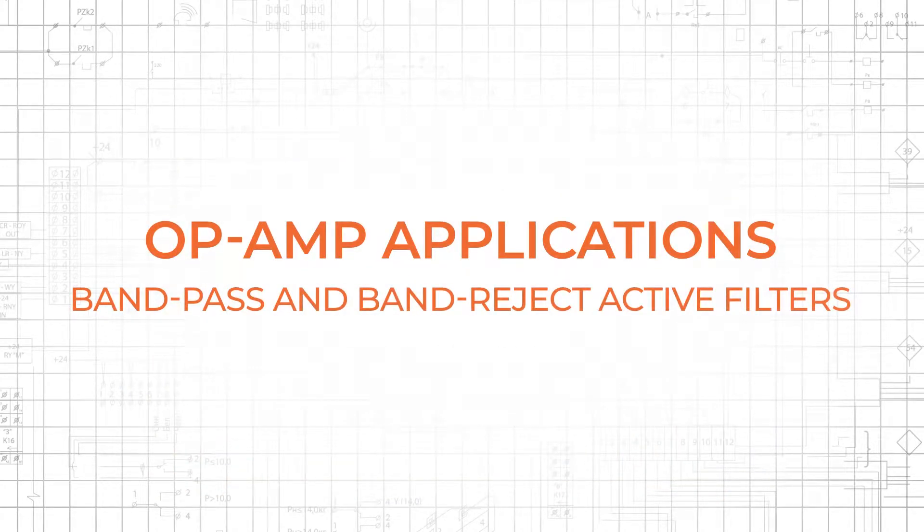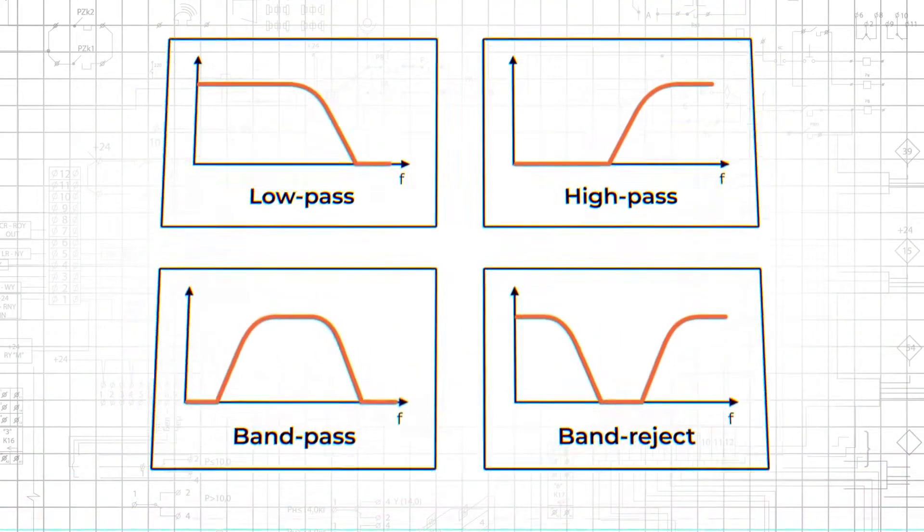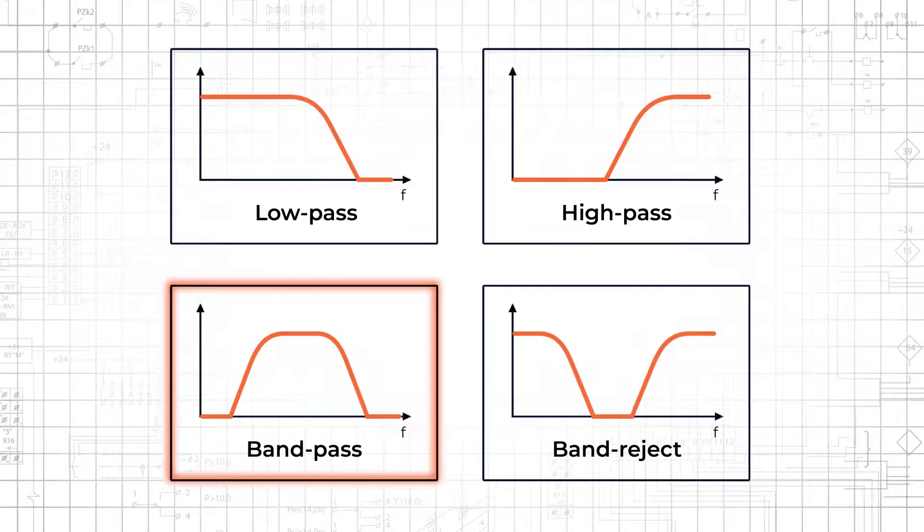In this video, we'll examine op-amp based bandpass and band-reject active filter topologies. A bandpass filter passes frequencies that fall only within a relatively narrow range and is widely used in communication systems to separate a signal of interest from other signals close in frequency.